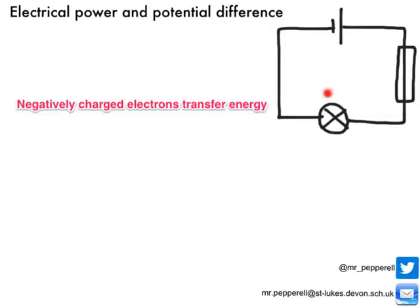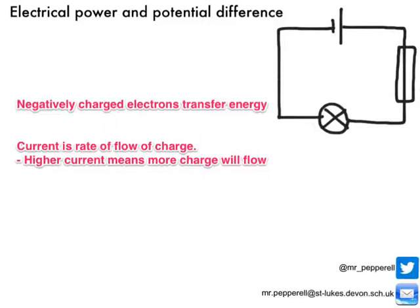Whenever you turn on a device like the bulb in this circuit, millions of electrons flow from the power supply through the circuit and through the bulb. Every single one of these electrons as it goes through the bulb transfers a tiny amount of energy. The more electrons that flow — because each of them transfers a little bit of energy — the more energy gets transferred. So if there is a higher current flowing through the bulb, remember current is the rate of flow, there would be more charge flowing through every second. A higher current just means the electrons are going through faster, each one delivering a little bit of energy.